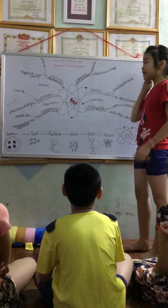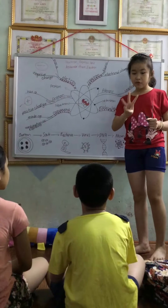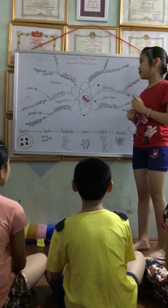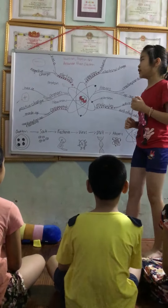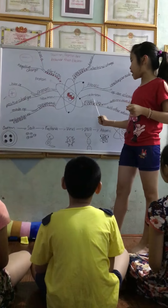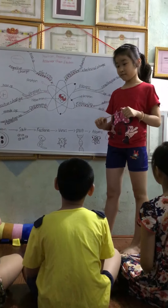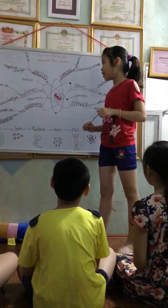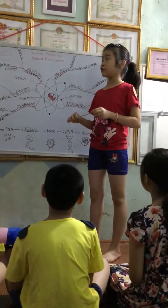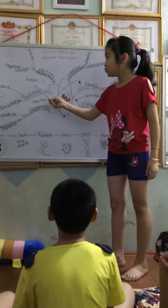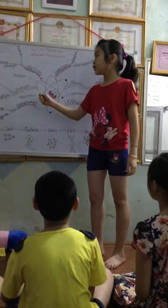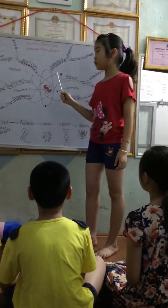So, in the atom, we have three main parts: proton, neutron, and electron. You need to remember these words. So, first of all, I will explain the proton.